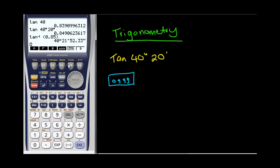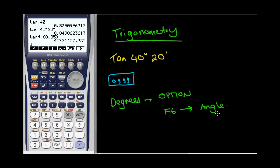So that's just very briefly using trigonometry in run mode and locating our button for degrees and seconds. For degrees and minutes, you might want to write this down: we press the Options button, then F6 to give us more options, and then Angle. And that will get us there again.